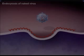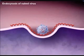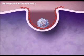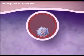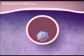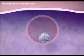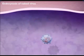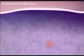A naked virion also enters by endocytosis. Since the virus has no envelope, it cannot fuse with the plasma membrane. After being engulfed, the viral nucleic acid is released from the endocytic vesicle. The nucleic acid then separates from the capsid.